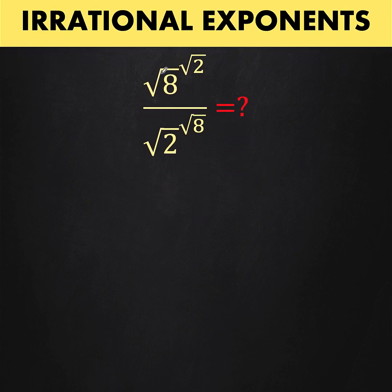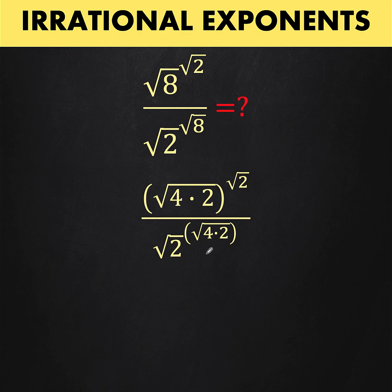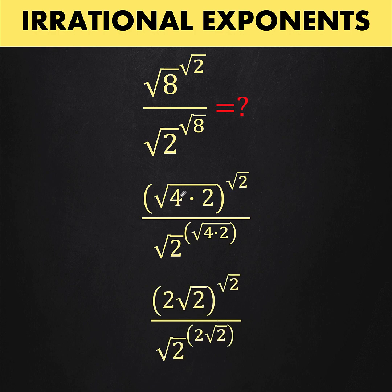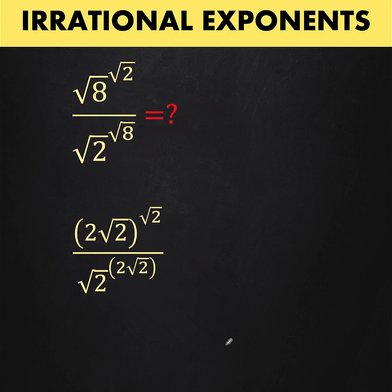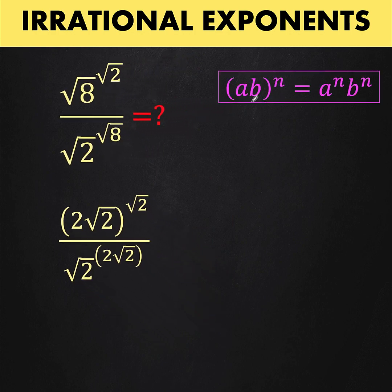When you have a square root symbol, the goal is always to find a perfect square under the radical. Here, 8 can be written as 4 times 2, and 4 is a perfect square. So we write 8 as 4 times 2 — both in the numerator and denominator. Taking the square root of 4 gives 2, and the factor of 2 remains under the radical, giving us 2 times the square root of 2 as the simplified form.